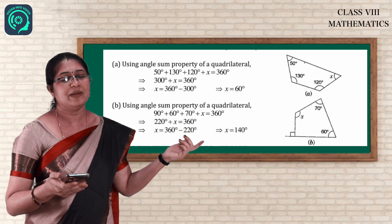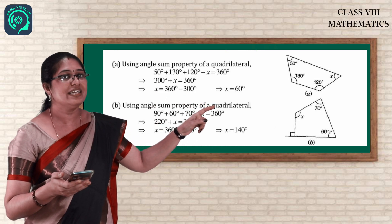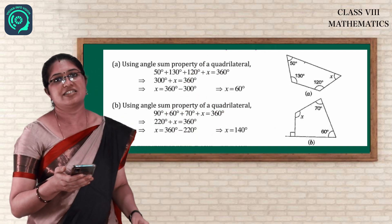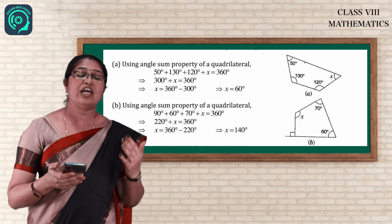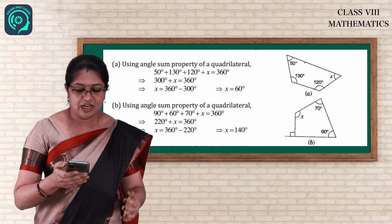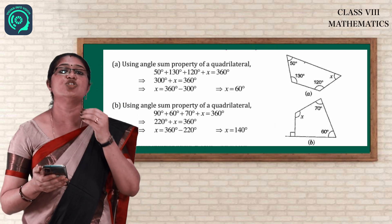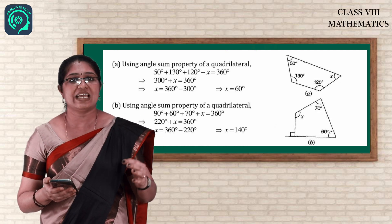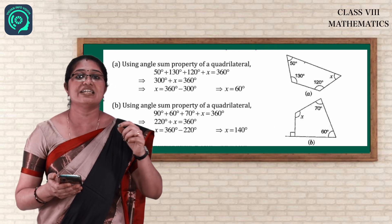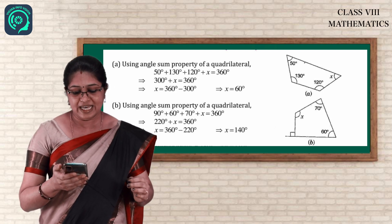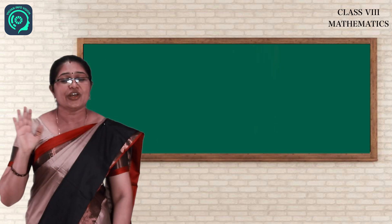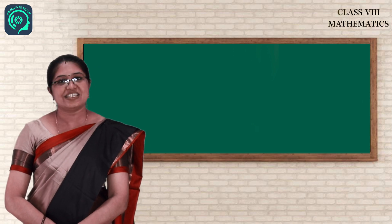Let us see the next problem. In the picture you can see a square symbol meaning 90 degrees, so that unknown side is also 90 degrees. The other angles are 70 degrees and 60 degrees. To find x: 70 plus 60 plus 90 equals 220 degrees. Since 220 plus x equals 360, x equals 360 minus 220, which is 140 degrees. This is how you find the unknown value. Thank you, children, and we will see you in the next session.